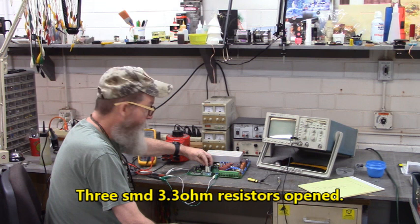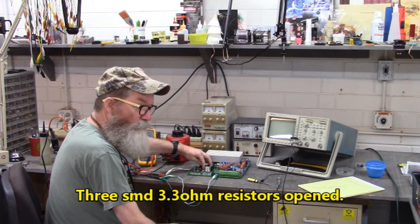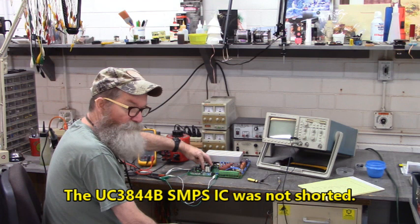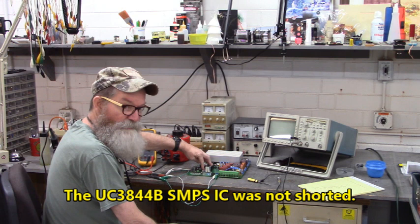There's three 3.3 ohm surface mount resistors that were in the feedback circuit to the UC-3844 switch mode power supply. Those three resistors had holes in the middle of them. The UC-3844, it wasn't shorted. I couldn't believe it, but I replaced it anyways.